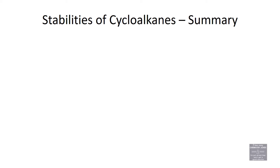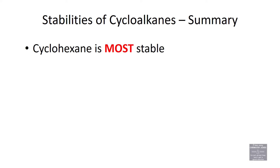In the previous video we talked about conformations of alkanes, acyclic alkanes. We'll show you a couple models in a moment, but let's talk about cycloalkanes today. Cyclohexane is the most stable of the cycloalkanes because it has the most ideal bond angle. Those carbons are tetrahedral, aiming toward 109.5 degrees, and cyclohexane is the best at achieving that bond angle of the cycloalkanes we will discuss.